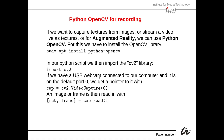If we have a USB webcam connected to our computer on the default port 0 — which it usually is if you just have one camera — we get a pointer to it with: cap = cv2.VideoCapture(0). VideoCapture is a function inside the cv2 library which creates the pointer to camera 0. The cap object then delivers several functions. For instance, cap.read() accesses the camera and returns the current frame and a binary value 'ret' which is true if successful and false if it failed.